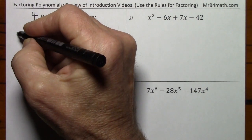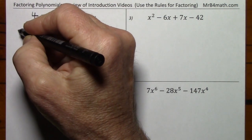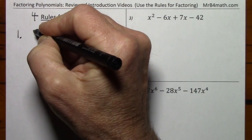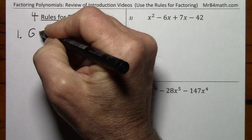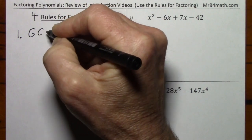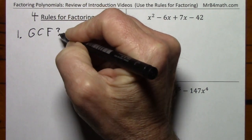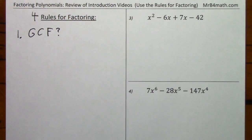Number one on the list: is there a greatest common factor? If there is, you factor it out. From here out, you pay attention to how many terms you're given.